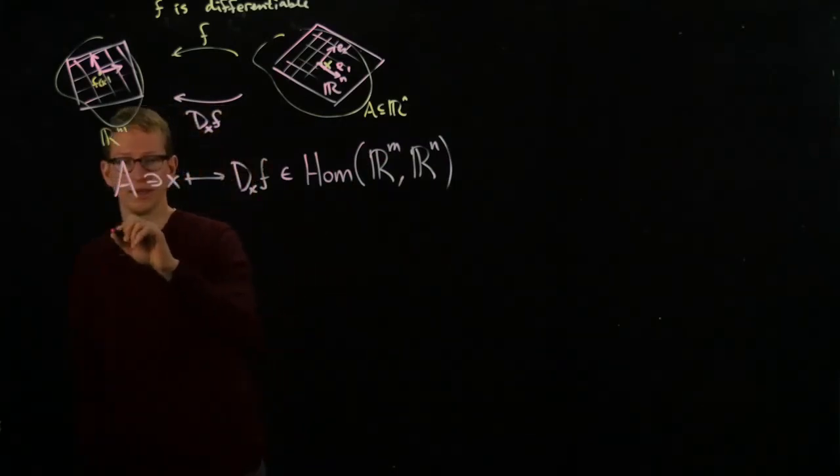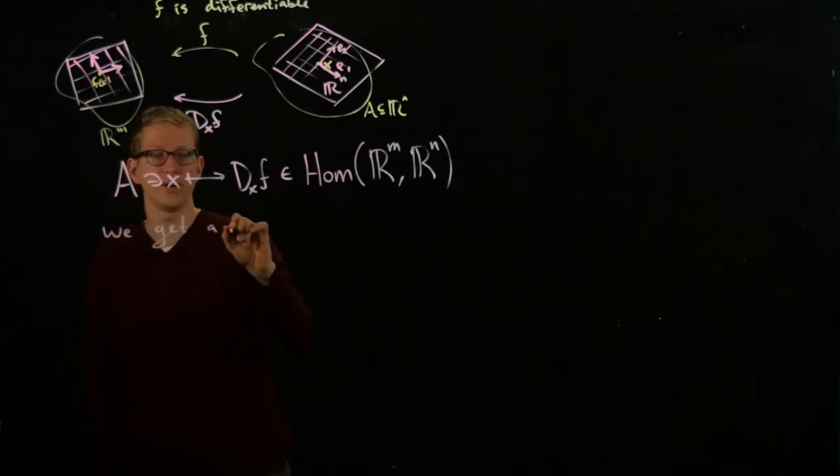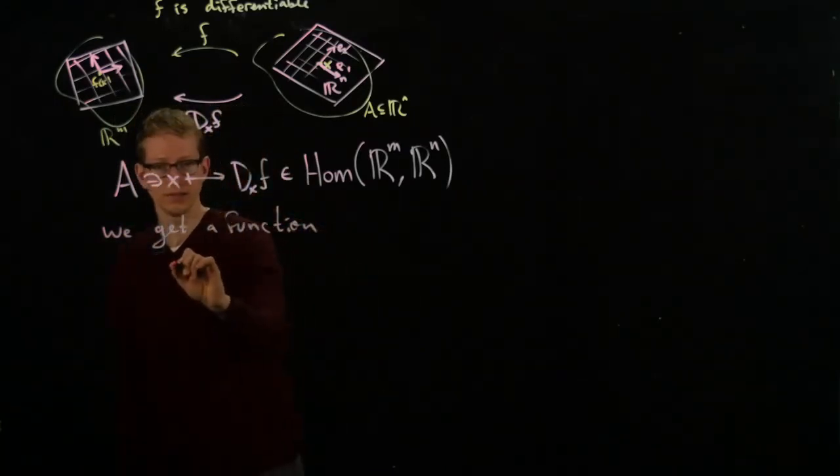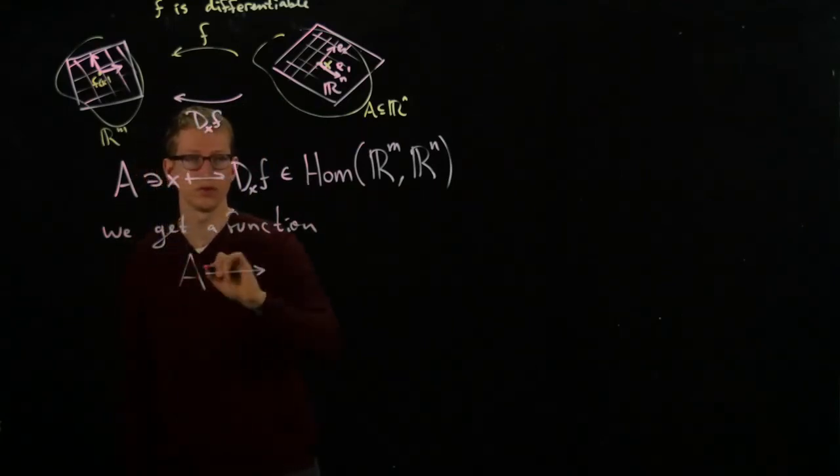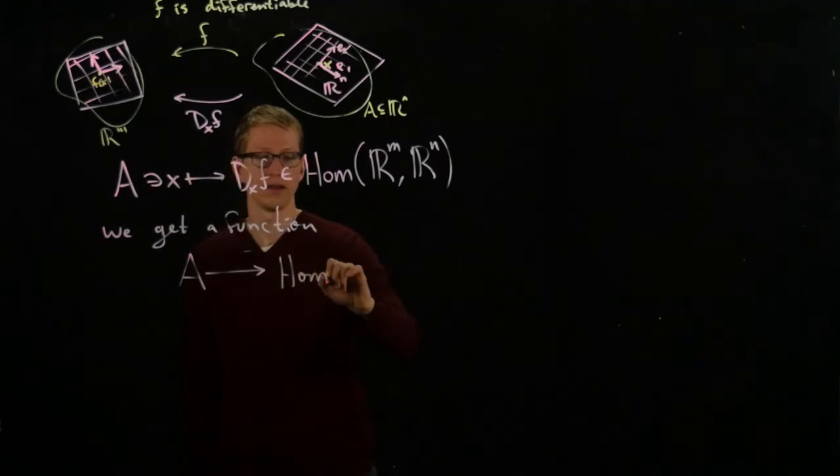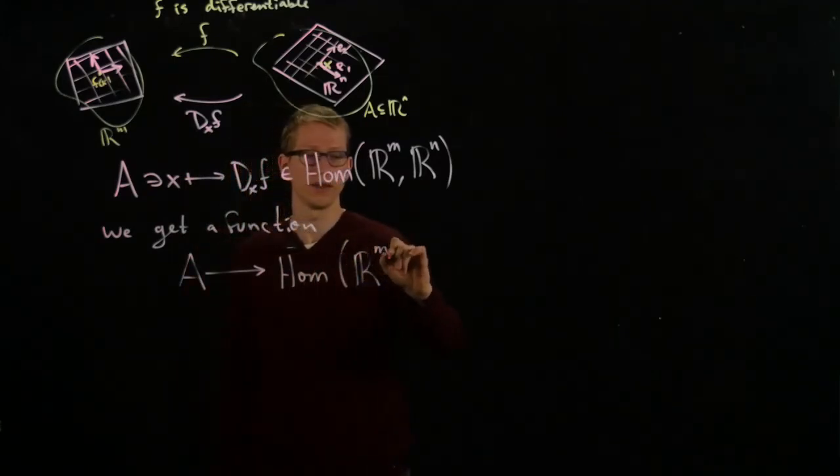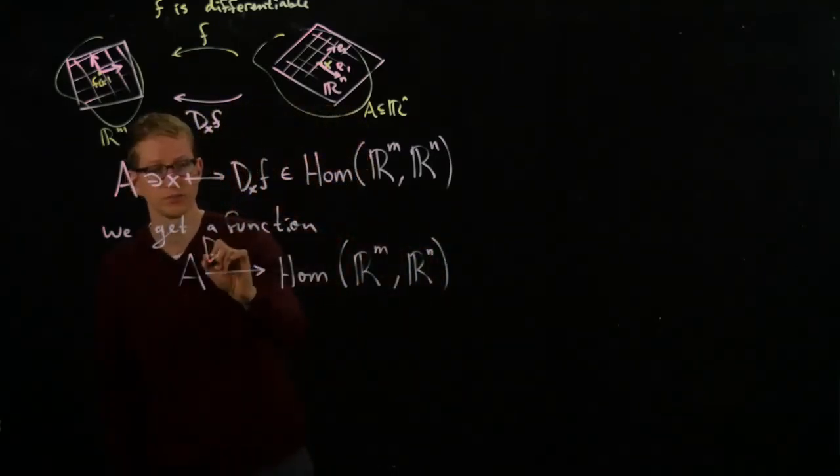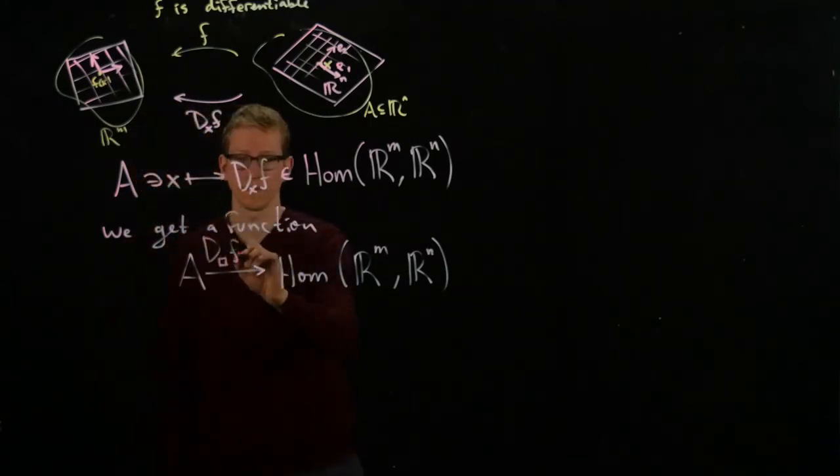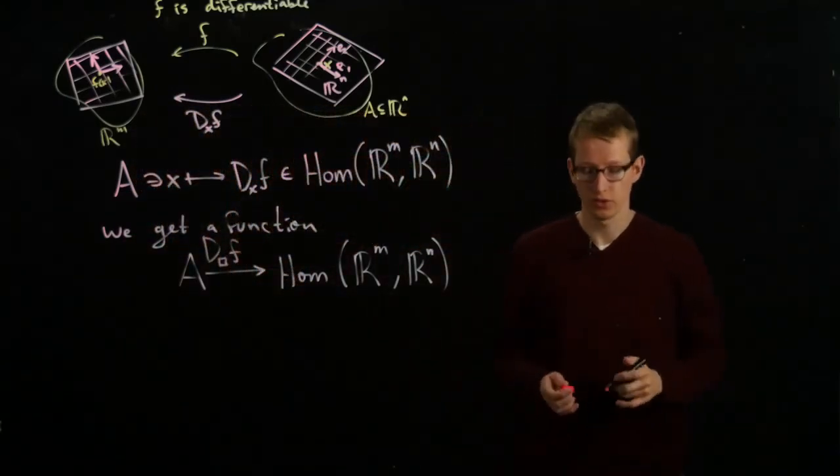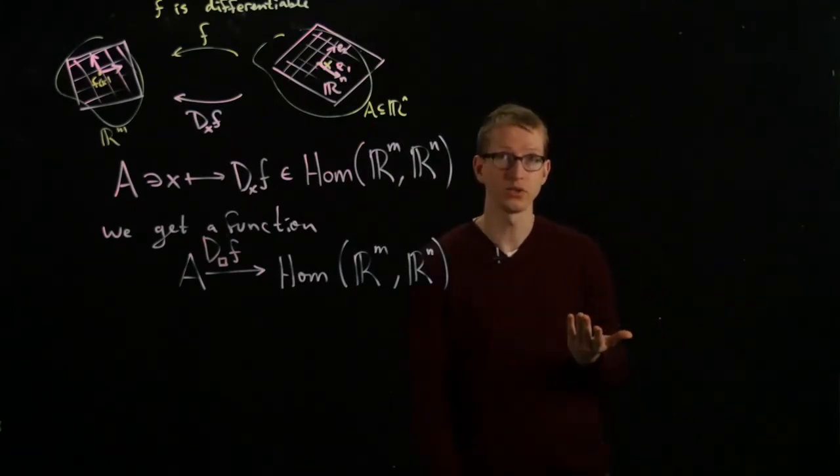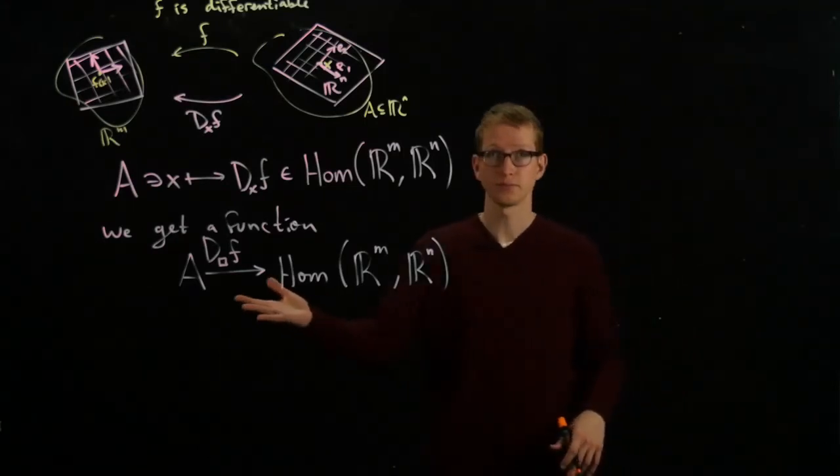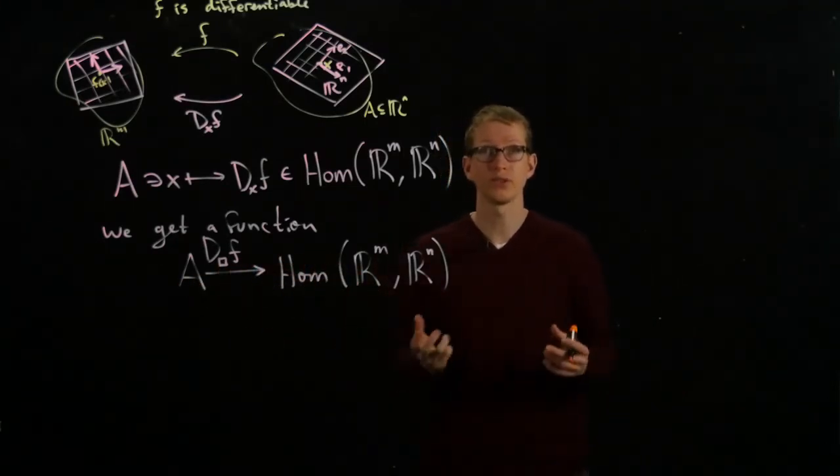So, what we get is a function. And this function is a function from A to Hom of R^n to R^m. And we denote this function by D box F. So for every function F, we can calculate its differential. Again, assuming it's differentiable, which we will throughout this entire video, then we'll get such a linear transformation for every single one of these points.